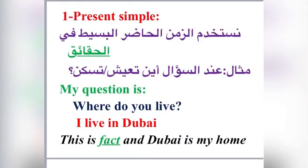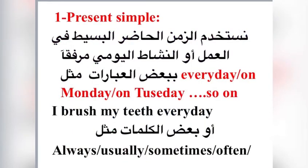Present Simple. We use the present simple for facts. For example, when asked where you live: 'Where do you live? I live in Dubai.' This is a fact — Dubai is my home. We also use it for daily activities with expressions like every day, on Monday, on Tuesday, and so on. For example: 'I brush my teeth every day.'